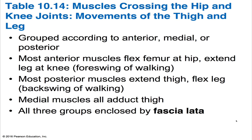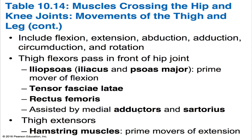Movements of the thigh at the hip joints are accomplished largely by muscles anchored to the pelvic girdle. Like the shoulder joint, the hip joint is a ball and socket joint that allows for flexion, extension, abduction, adduction, circumduction, and rotation. Muscles that affect these movements are among the most powerful muscles in the body. The thigh flexors pass in front of the hip joint; the most important are the iliopsoas, the tensor fasciae latae, and the rectus femoris, assisted by the adductor muscles and the strap-like sartorius muscle.